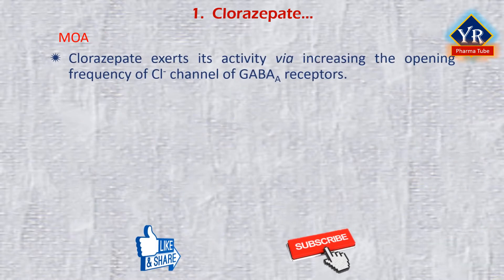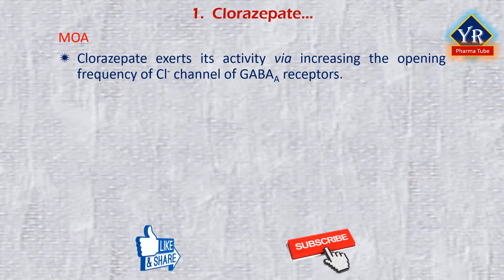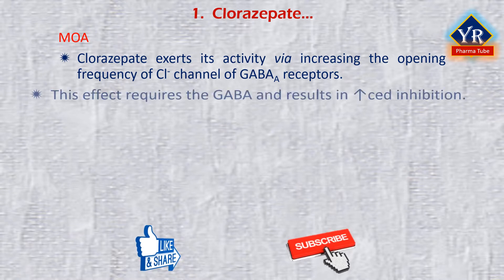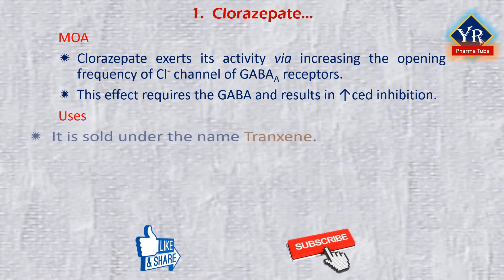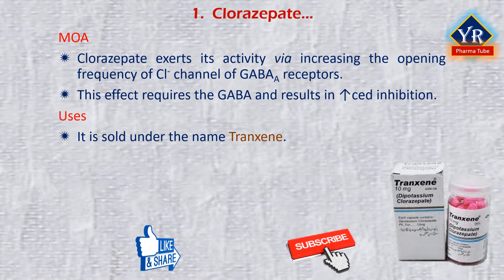Chlorazepate exerts its pharmacological properties by increasing the opening frequency of the chloride ion channel of the GABA-A receptor. This effect of benzodiazepines requires the presence of the neurotransmitter GABA and results in enhanced inhibitory effects of GABA acting on GABA-A receptors. Chlorazepate is sold under the brand name Tranxene.